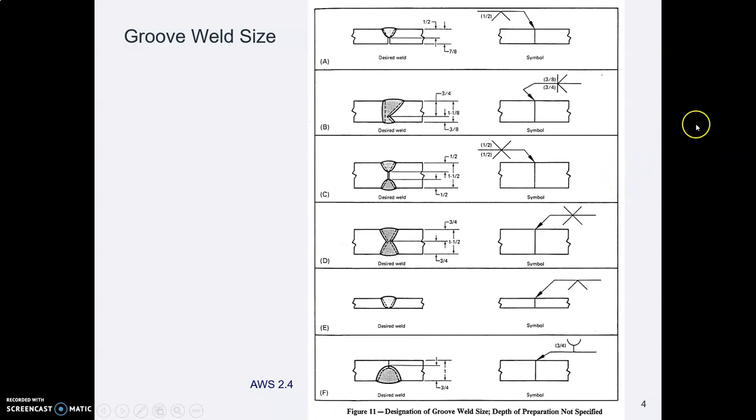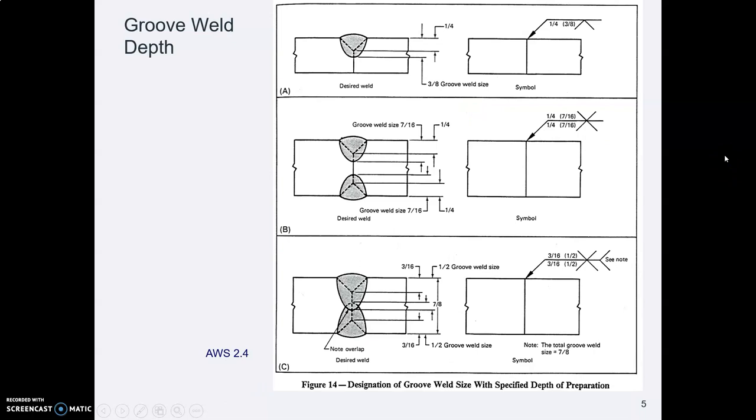Here again is AWS talking about depth of preparation and depth of weld itself. Here they are again. Notice how in this example on the bottom, these sizes indicate that actually these two weld materials overlap each other some. That's okay.